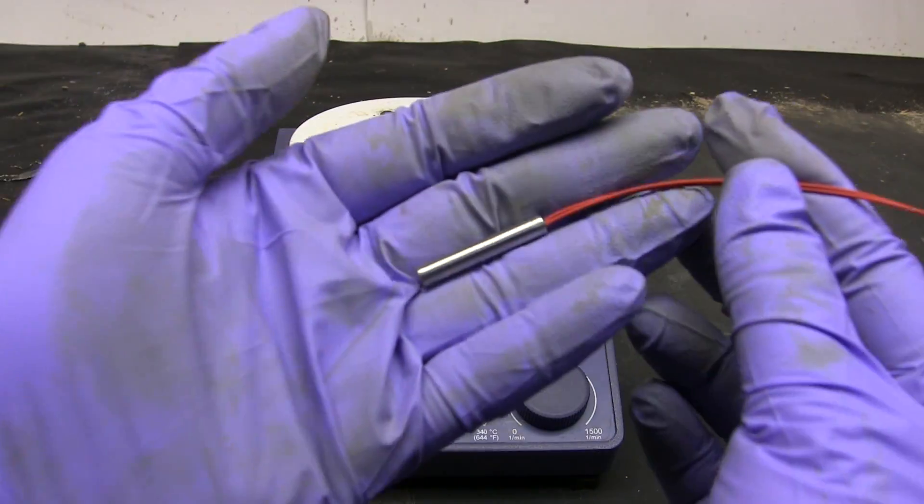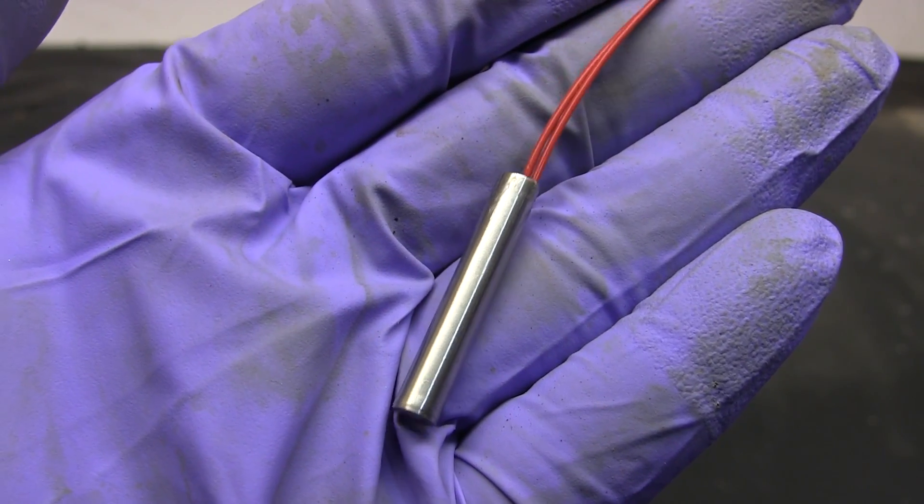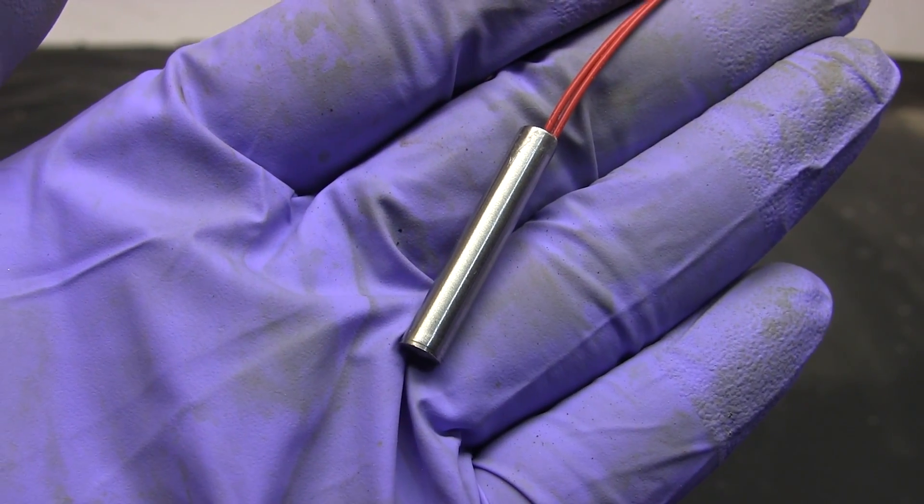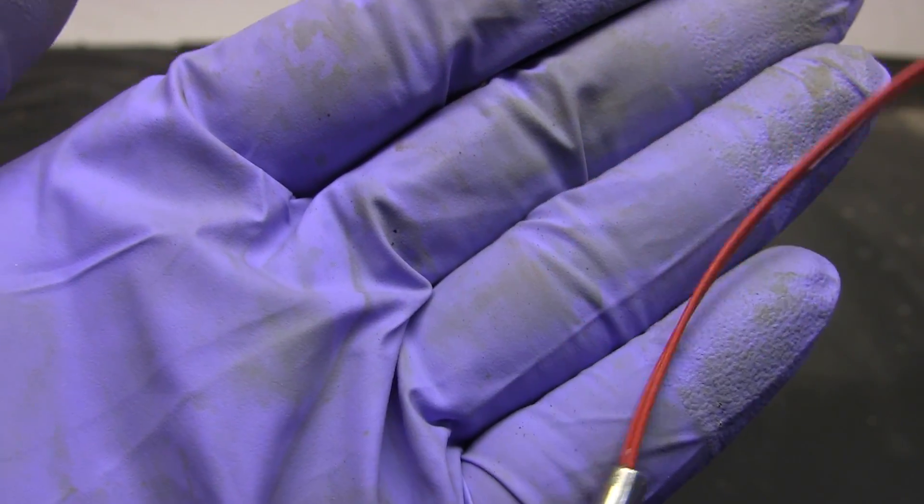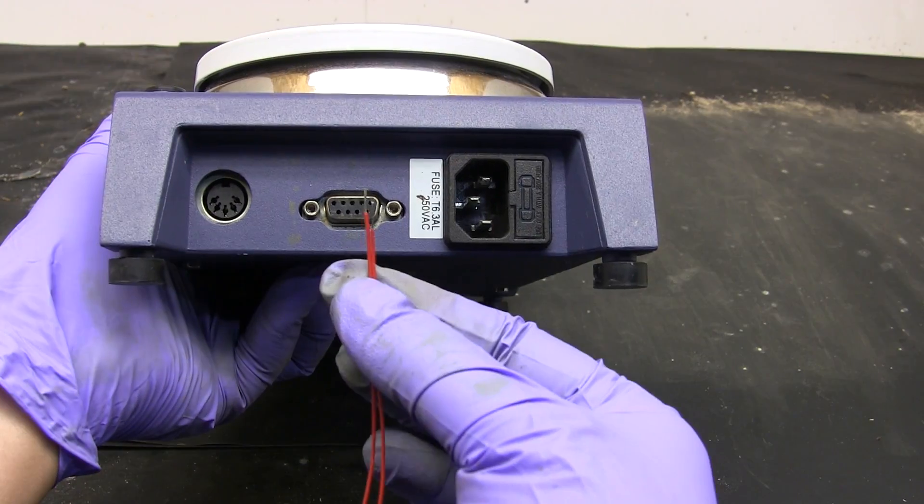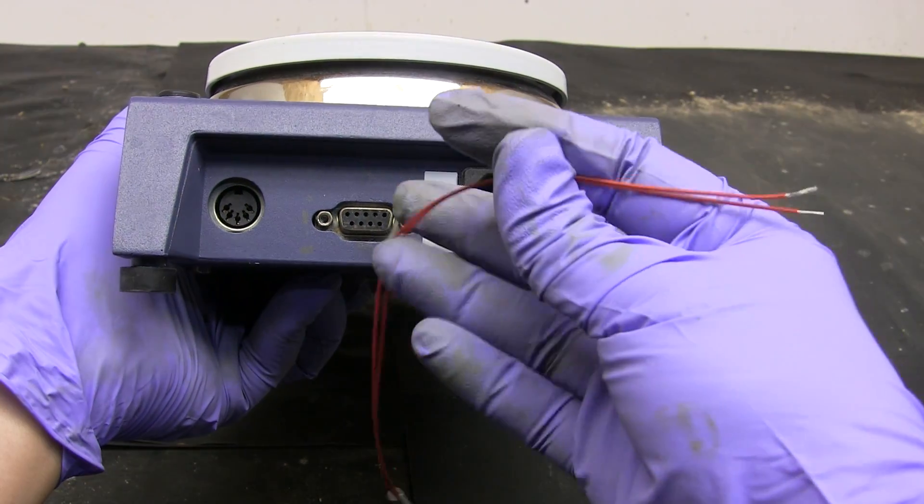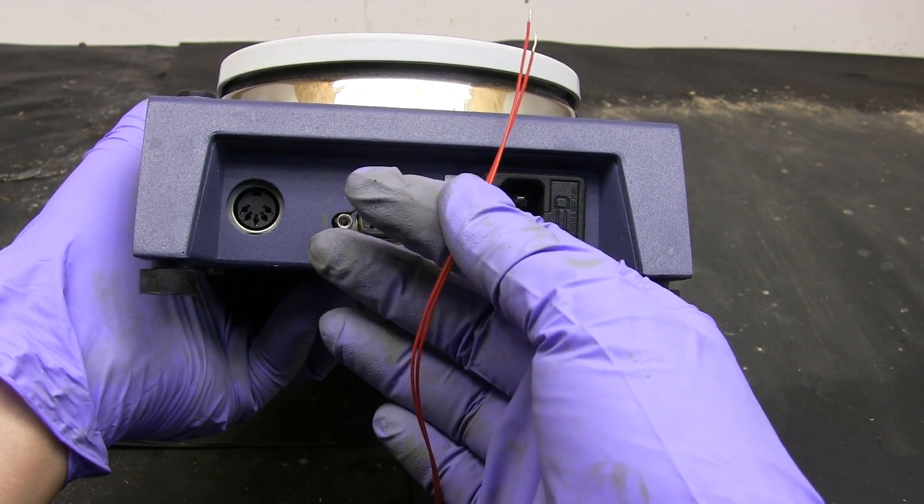The first thing to buy is a sensor element. I got this PT1000 cartridge type element off eBay for about $10. You can also buy the bare element by itself but I wanted the cartridge for more durability. Now you can try inserting the leads into the connector but that's pretty unstable and the wires are too short to be useful.